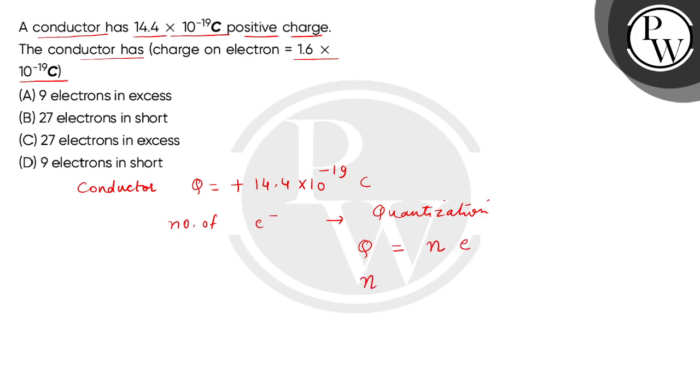So here we get the number of electrons: n = q/e. Now q's value is 14.4 × 10^-19 coulombs, and the basic unit of electronic charge is 1.6 × 10^-19 coulombs.